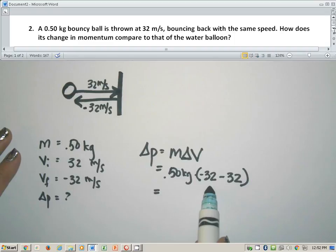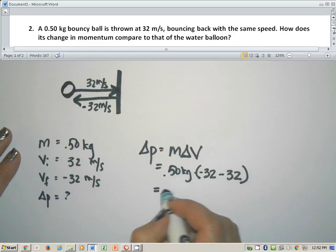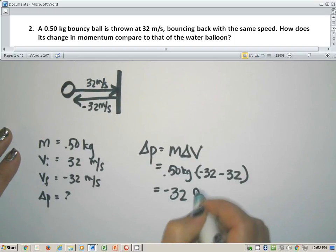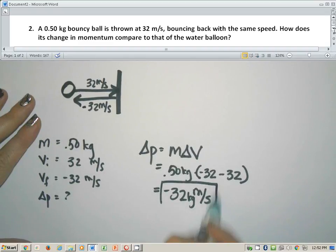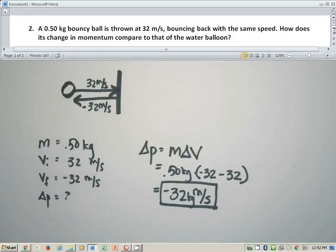This will add up to be negative 64 and you'll end up with a final answer of negative 32 kilograms meter per second. All right. So the comparison is, this is twice the momentum because it's bouncing back. It's not just going splat. So there you have it. There's how to work problems that bounce.